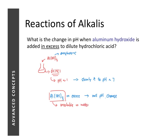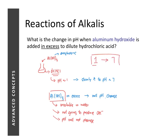When we add aluminium hydroxide in excess, it will not dissolve in water and will not produce hydroxide ions. Since it doesn't produce any hydroxide ions, the pH of the solution will not change. So when aluminium hydroxide is added in excess to dilute hydrochloric acid, the pH change is from 1 to 7. Beyond pH 7, the excess aluminium hydroxide does not dissolve and produces no hydroxide ions, so the pH remains constant at 7.